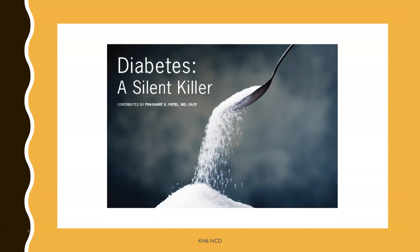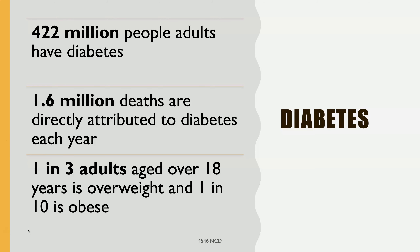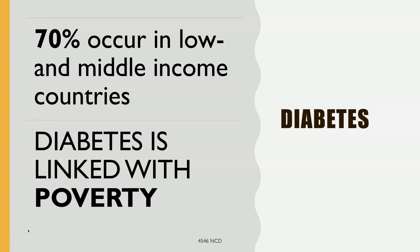Diabetes is a silent killer. 422 million adults have diabetes, 1.6 million deaths are directly related to diabetes, and 1 in 3 adults over age 18 is either overweight while 1 in 10 are obese — both risk factors for diabetes. 70% of diabetes cases occur in low- and middle-income countries. Again, there are inequities, and diabetes is linked with poverty.